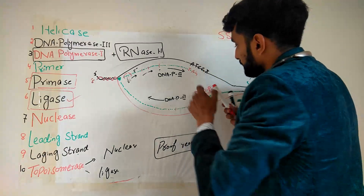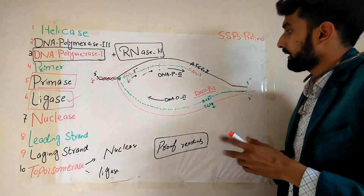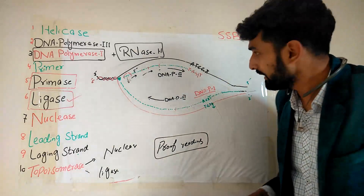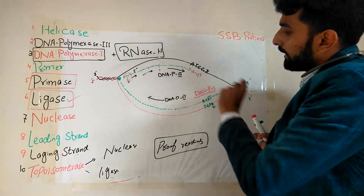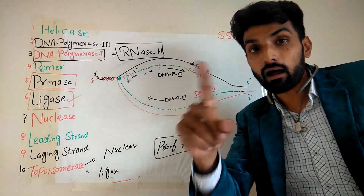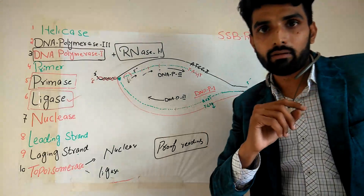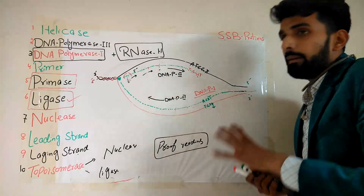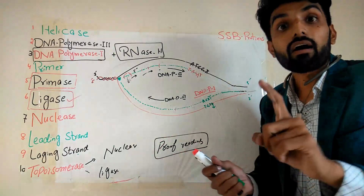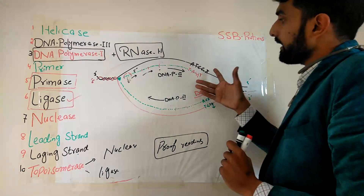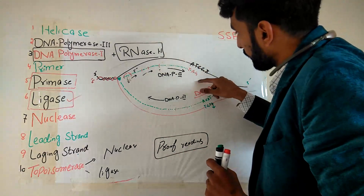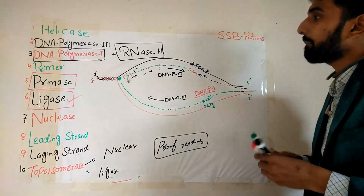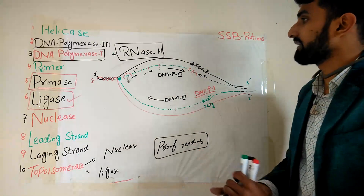So DNA polymerase 3 has a nuclease domain for proofreading. Whenever there is any kind of mistake, it goes back, cuts the phosphodiester bond with the nuclease domain, and places the right nucleotide. In this way, it keeps moving and an exact replica of the DNA is formed. This is the process of replication.